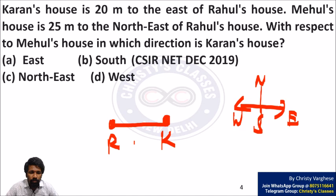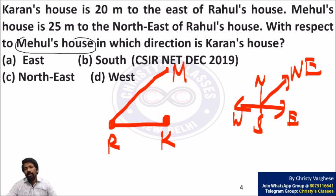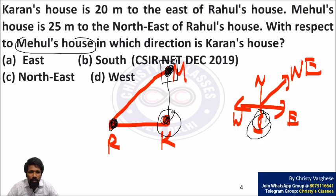Mahul's house is 25 meters to the northeast of Rahul's house. Northeast direction means something like this — so Mahul's house is here. The question asks: with respect to Mahul's house, in which direction is Current's house? Taking Mahul's house as origin, Current's house will be below it — below means south. So option B, south, is the answer.